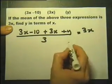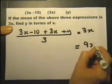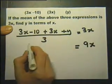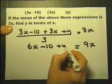So let's multiply both sides of this by 3, and that will give us 9x there. At the same time, let's put that 3x with that 3x and get 6x minus 10 plus y.